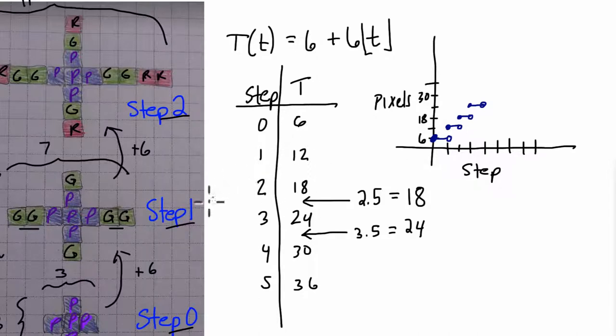So for you, I encourage you to pick any one of the other patterns and write it as a step function. One nice, easy one to do might be to look at the red and green pixels all together and write that as a step function. All right, I hope this helped.